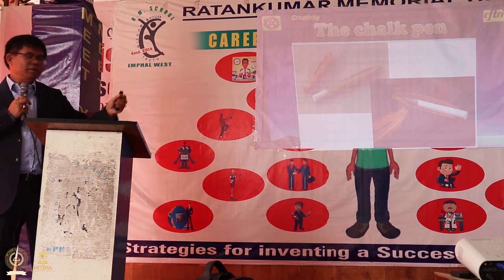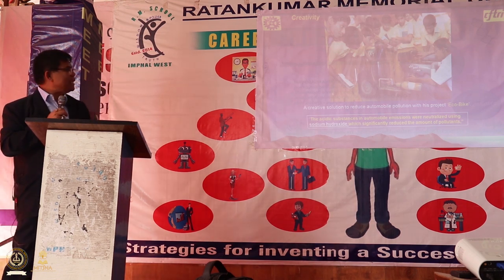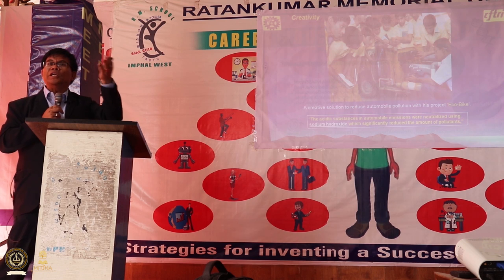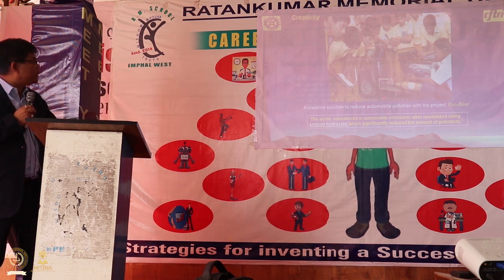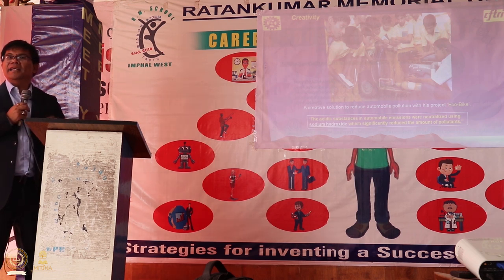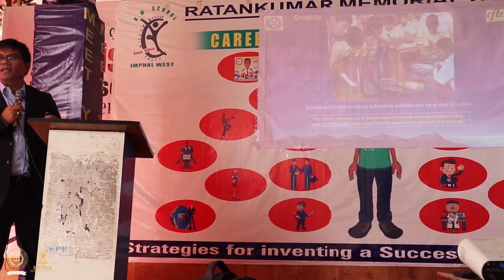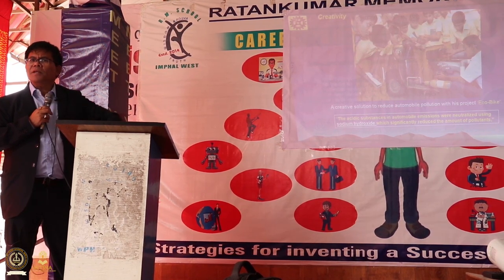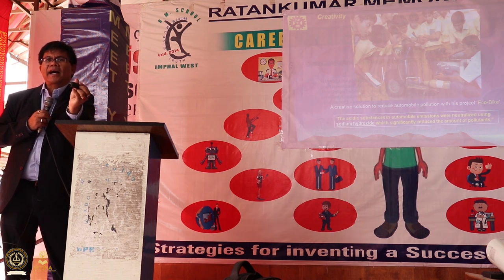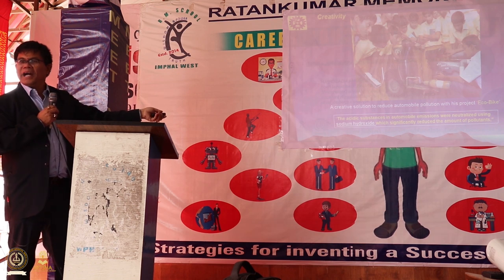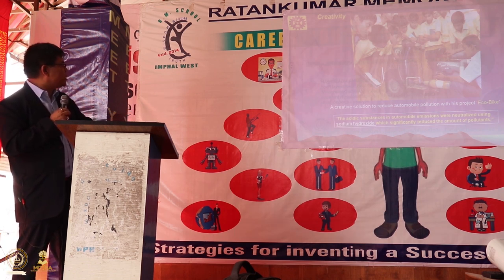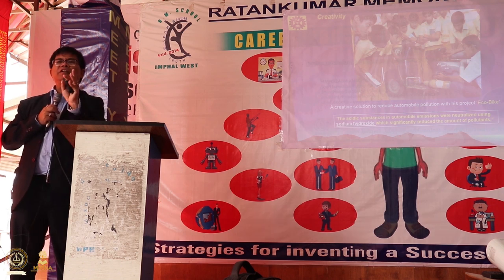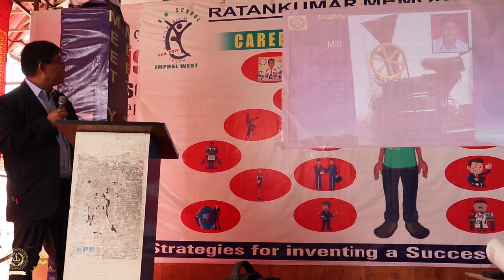Another student got a prize. In a scooter, exhaust comes out causing pollution. To reduce the pollution, he used sodium hydroxide — by placing a chemical unit on the scooter exhaust to neutralize carbon monoxide, reducing pollution. If every scooter fits this device, pollution will be controlled. He presented this in a competition and won a prize. That is the idea of making this invention.